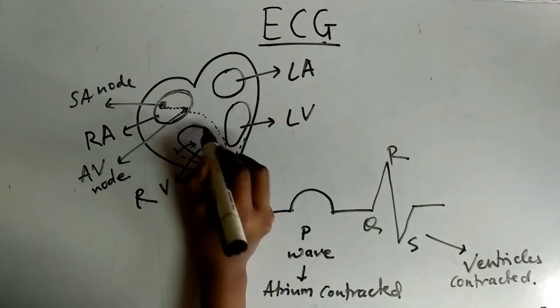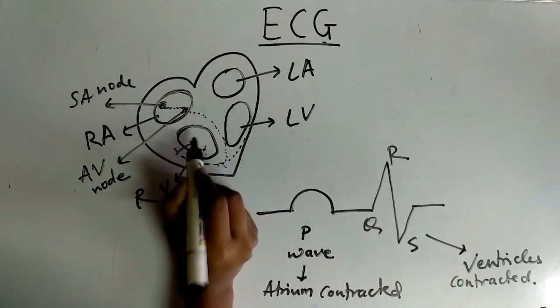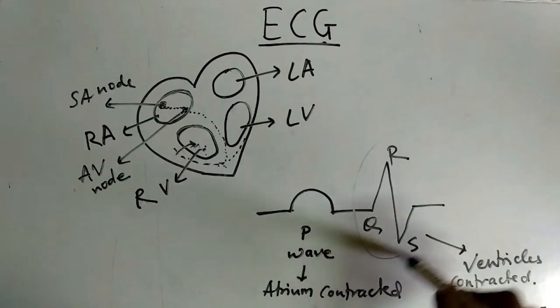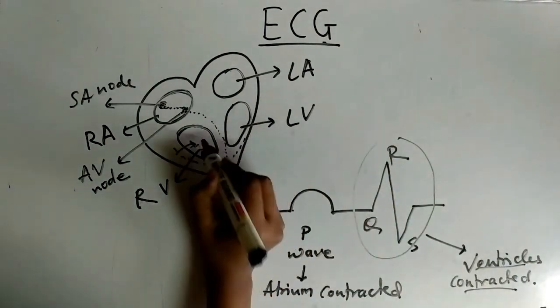Once the ventricle receives the signals, it gets contracted and the QRS band represents ventricle contraction.